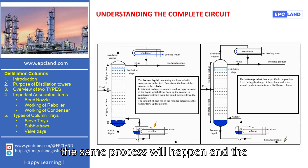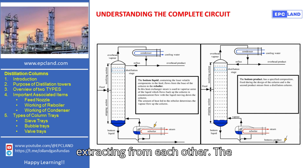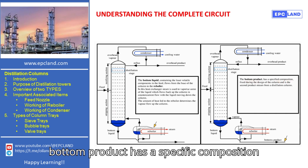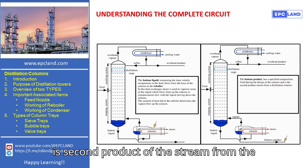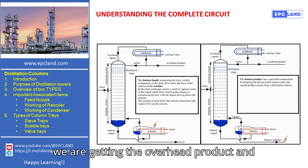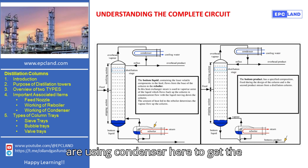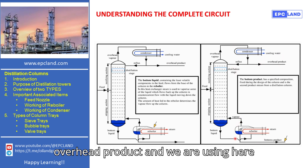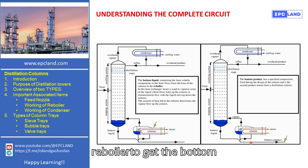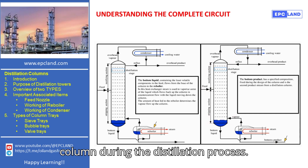The liquid and vapor continue to extract components from each other, and the bottom product has a specific composition fixed during the design of the column — it is the second product from the distillation column. In summary, we use a condenser at the top to get the overhead product and a reboiler at the bottom to get the bottom product. This covers the basic concept of what is happening inside the column during the distillation process in the rectifying and stripping sections.